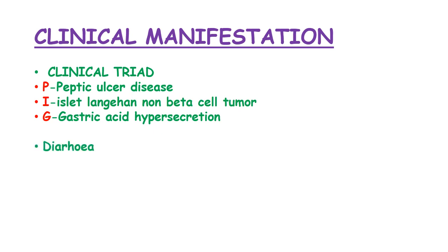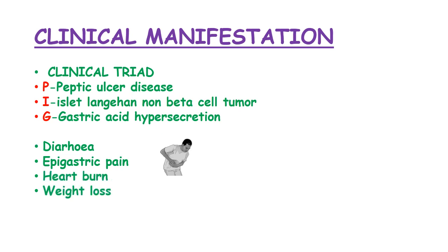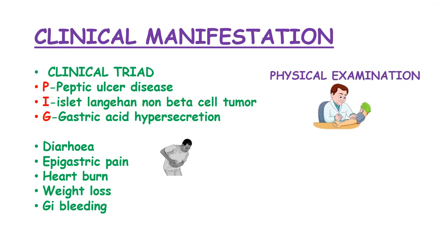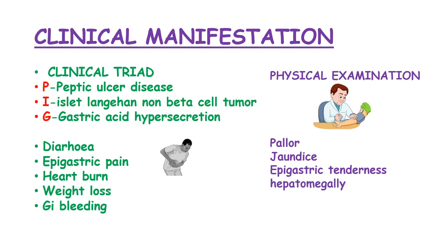On history, the patient will present with diarrhea, epigastric pain, heartburn, weight loss, and GI bleeding. On physical examination, findings may include pallor, jaundice, epigastric tenderness, and hepatomegaly in cases of hepatic metastasis.